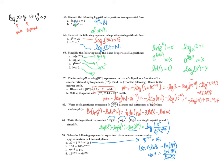Then add 1 and divide by 4. So x equals one-fourth times (ln(141) / ln(8) + 1). For the approximation, I get 0.8450 to four decimal places.